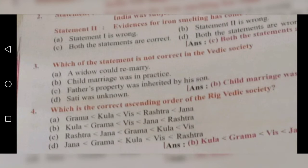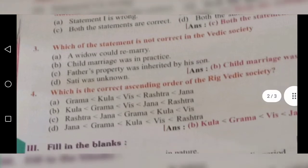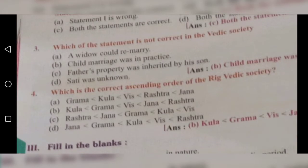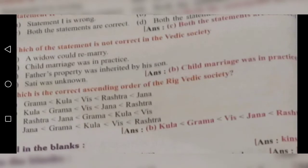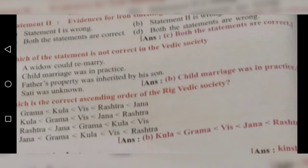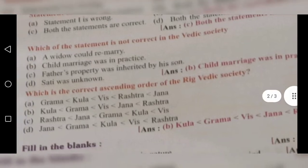Third question: Which of the statements is not correct in Vedic society? Option A: A widow could remarry. Option B: Child marriage was in practice. Option C: Father's property was inherited by his son. Option D: Sati was unknown. We have to find which statement was not followed in Vedic society. Option B — child marriage was in practice — is not correct. So option B is the correct answer.